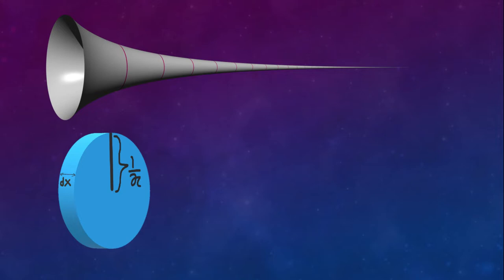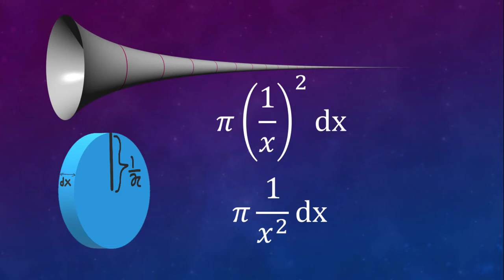So as the thickness is very small, it's almost a circular disk. And we know how to calculate the volume of a circular disk. That's simply equal to π times the radius squared times the thickness.